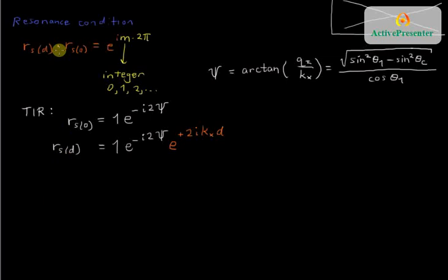And now I can write out my resonance condition. I could write out R times R and e to the i, but I'm going to directly cut to making the phases equal. So I'm going to set the exponents equal. The exponent of this product here is going to be negative 4ψ plus 2KxD. That's this side's phase. This side's phase is simply M times 2π.